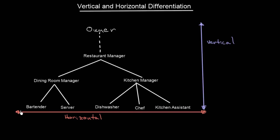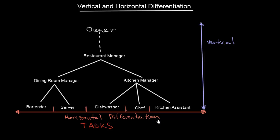Now let's think about what differs when we go horizontally. We start here and we have a bartender, then we move further and have a server, then a dishwasher, then a chef, and finally a kitchen assistant. What differs is tasks — so here we are moving along the tasks. And that is what we call horizontal differentiation: grouping employees and resources according to their tasks.